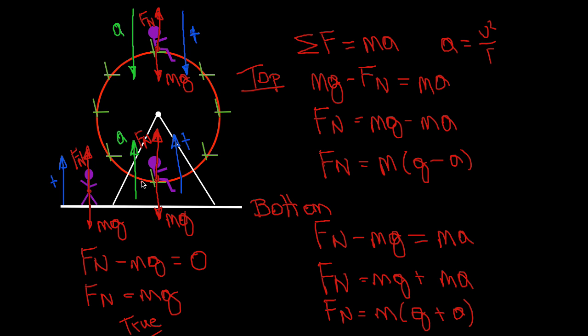So the normal force — our apparent weight — when we're at the bottom of the Ferris wheel is going to be greater than our true weight. At the top, the scale would read less than our true weight; at the bottom, the apparent weight reads greater than our true weight. We drew all the forces, drew the acceleration, showed the positive direction, summed everything up, and hopefully that was helpful. Thanks for watching and we'll see you next time.